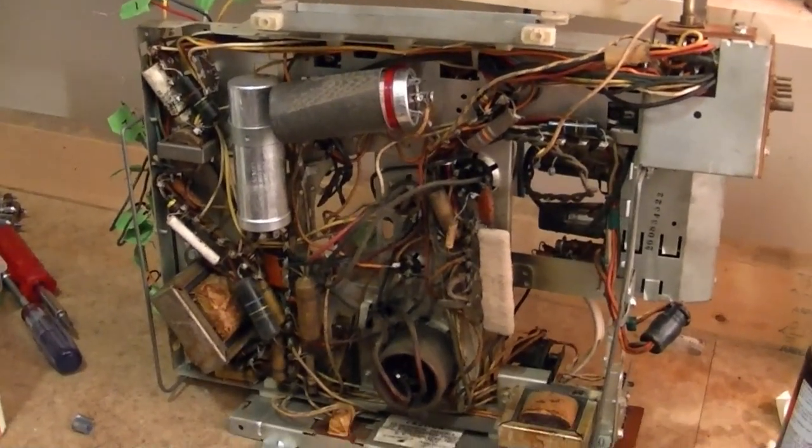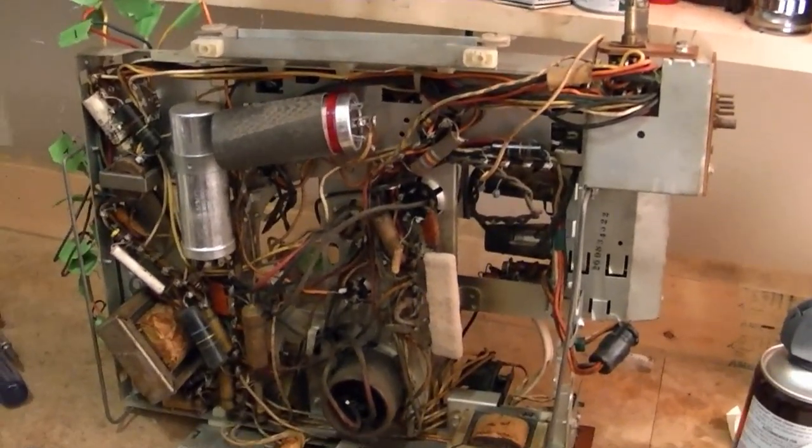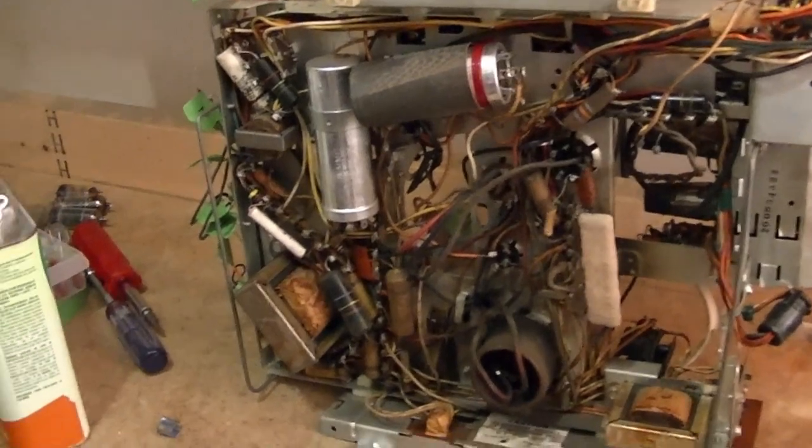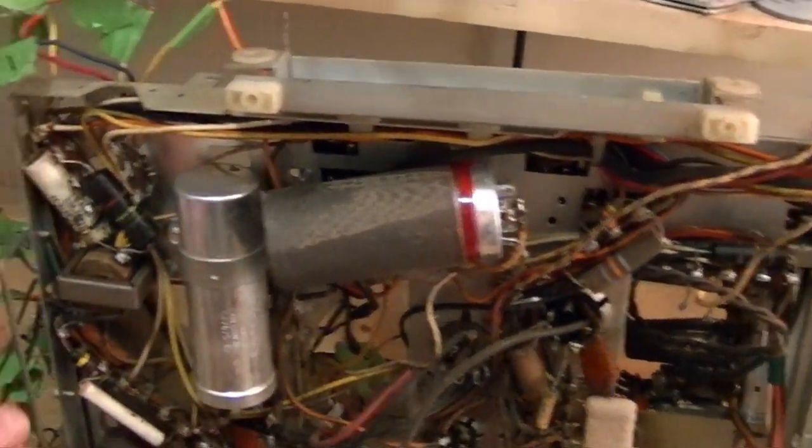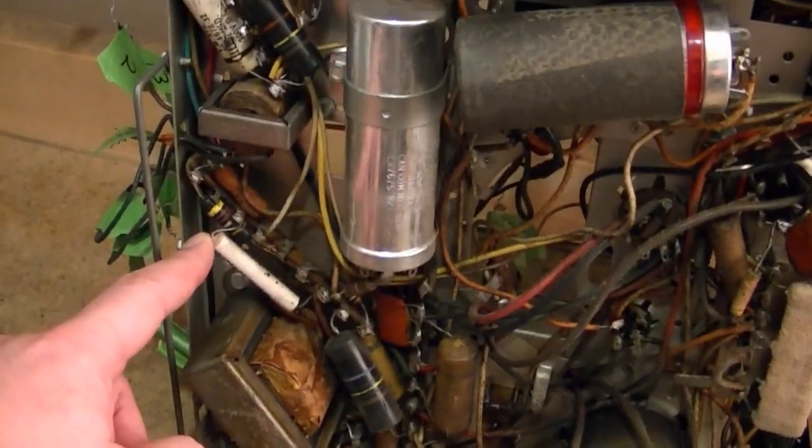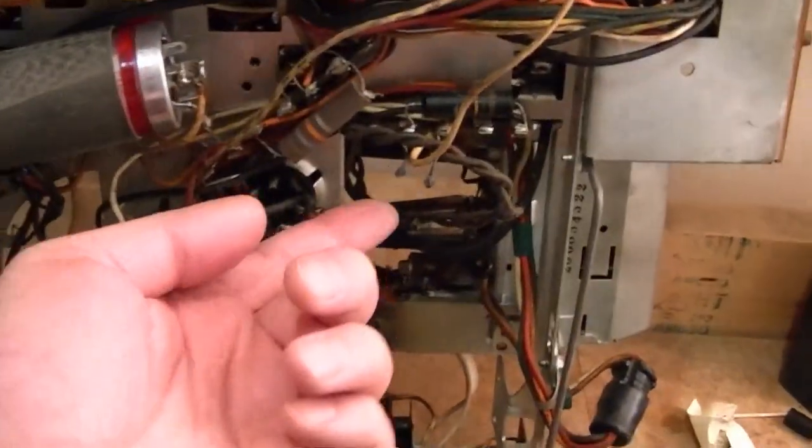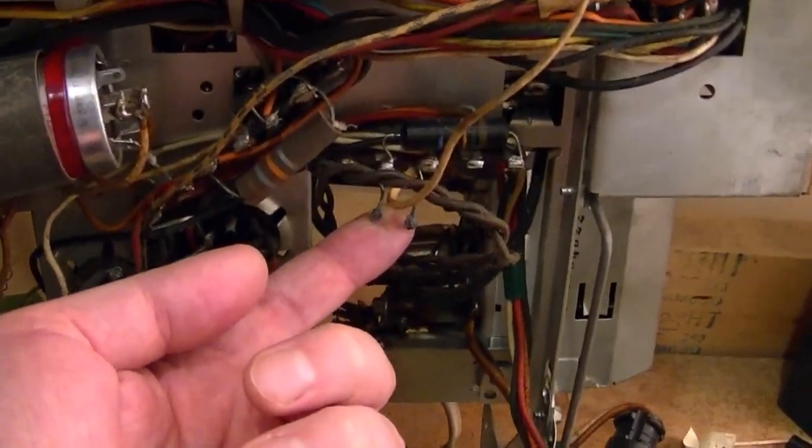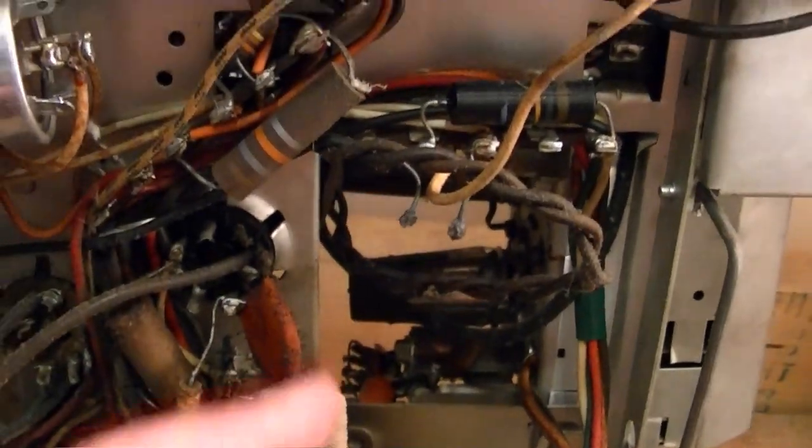The next main section I want to tackle is the underside of the chassis. There have actually been more repairs on this set than I realized. For example, this loose capacitor here is a replacement. I think the ceramic cap is a replacement, as is this. Also, if you recall, I mentioned about the thermistor being just gone. It should be right in here.